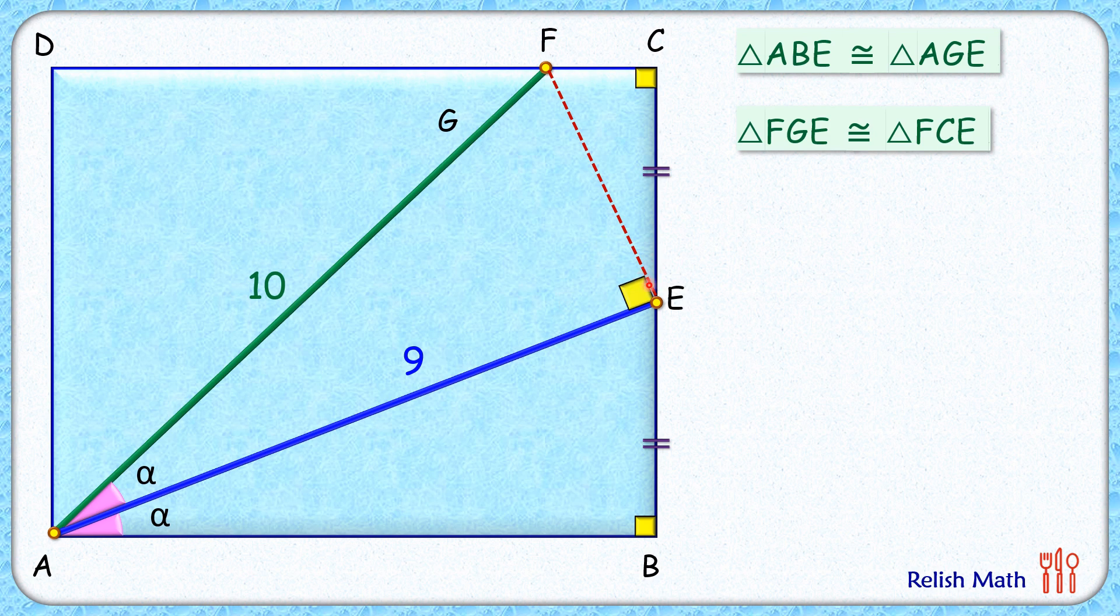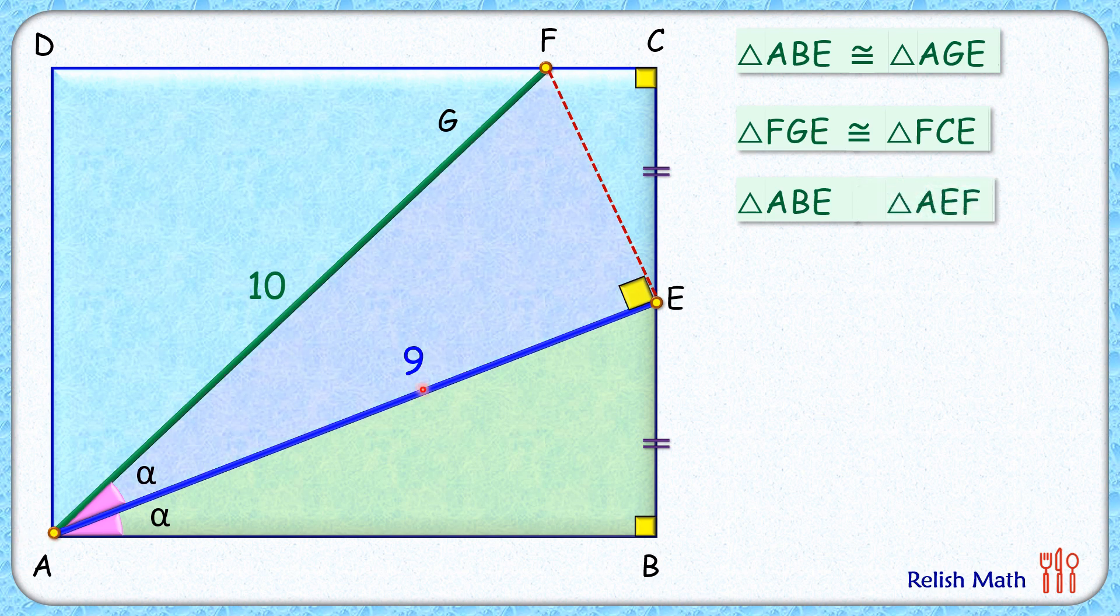And let's concentrate on triangle ABE and triangle AEF. Both the triangles have got angle alpha and 90 degrees. Thus by AA similarity, both the triangles are similar to each other.